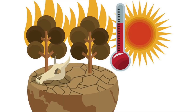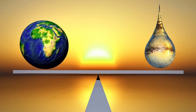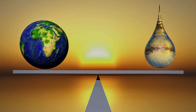Differentiation: as Earth continued to grow, it heated up due to the energy from impacts and the radioactive decay of elements. This heat caused Earth to differentiate, with denser materials sinking to the core and lighter materials rising to the surface.